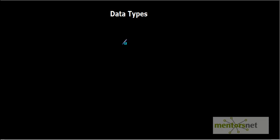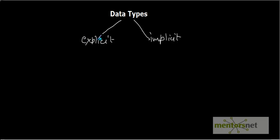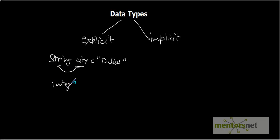Generally in coding languages, data types are defined in two ways: the first one is explicit and the second one is implicit. Explicit type of declaration means specifying the data type along with a variable name — for example, string city equals to Dallas, or integer i equals to 10. Here the variable name and its data type are both specified, so this is explicit type of declaration.